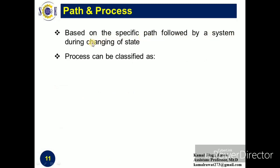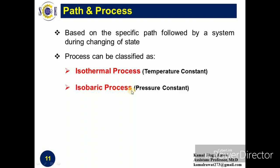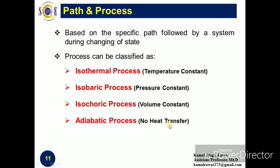Based on the specific path followed by a system during a change of state, processes can be classified. An isothermal process is one in which temperature remains constant. In our previous example, temperature remained constant during the change of state, so that is an isothermal process. A process in which pressure remains constant is known as isobaric. A process in which volume remains constant is known as isochoric. And a process in which heat transfer is not allowed — i.e., heat transfer is zero — is known as an adiabatic process.